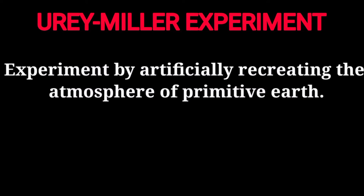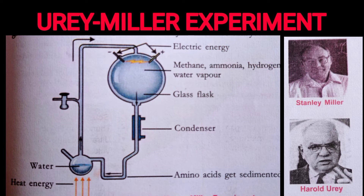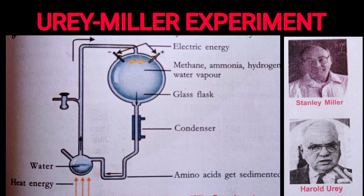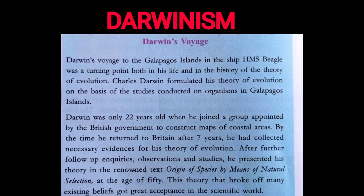This was demonstrated by an experiment artificially recreating the atmosphere of primitive earth. In a glass flask representing the primitive atmosphere, methane, ammonia, hydrogen, and water vapor were placed with no oxygen. A spark of electric energy was used as the energy source. A condenser was used for water vapor condensation, forming rain and the first primitive ocean. The water in the second flask contained amino acids — simple organic molecules. This experiment is known as the Urey-Miller test.